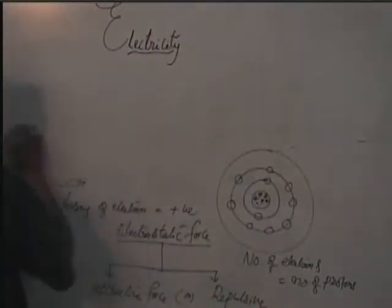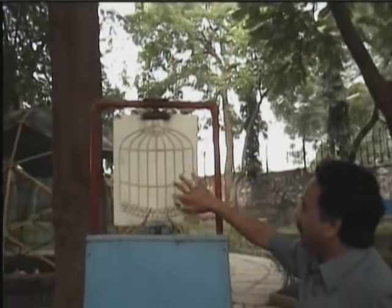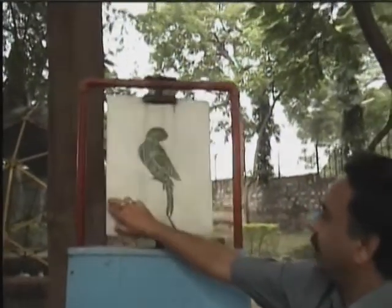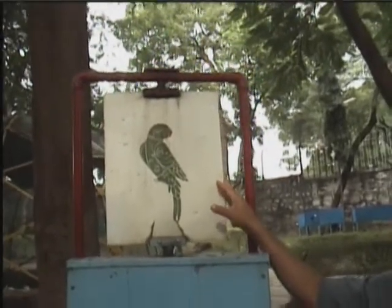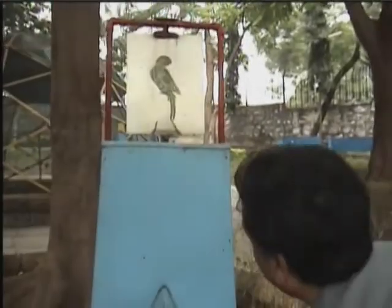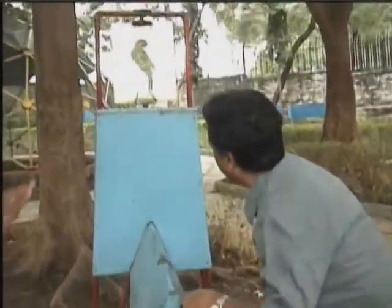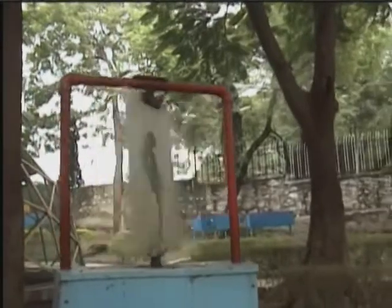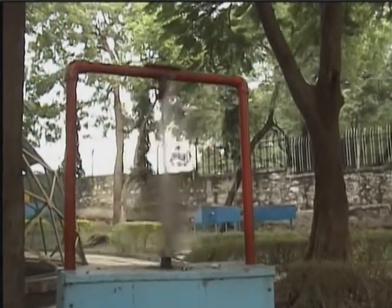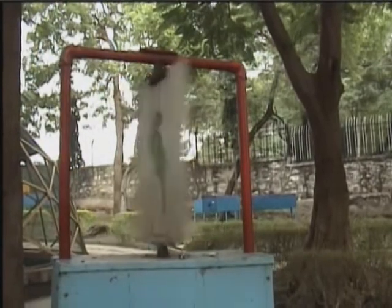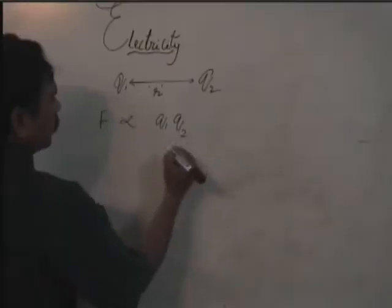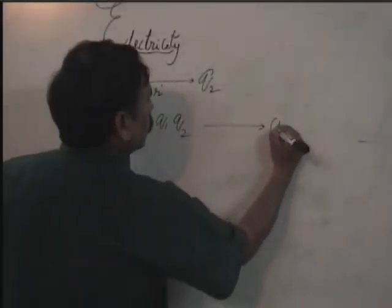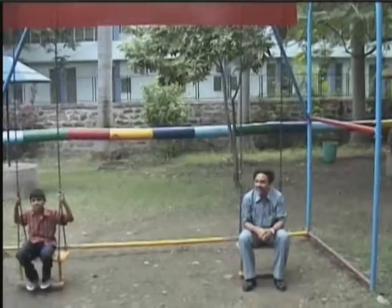Let us consider two point bars — one side the cage is there, the other side the parrot is there. Our eyes can see motion pictures if the frame rotates in a very fast manner. Now I will be rotating the frame and you will see as if the parrot is inside the cage moving.